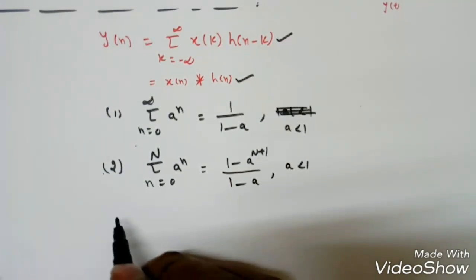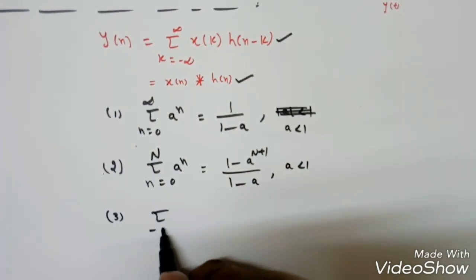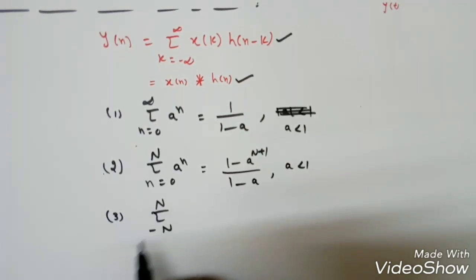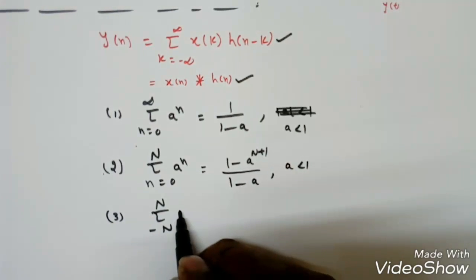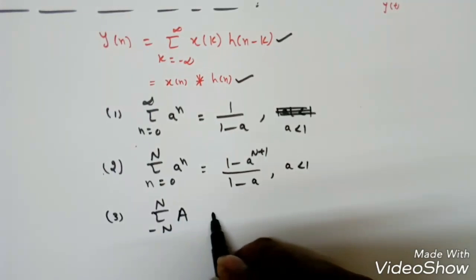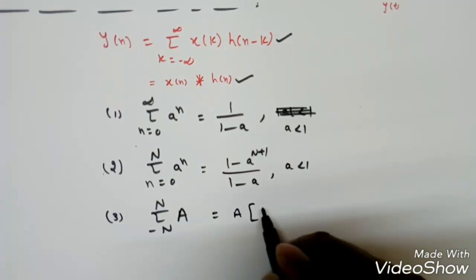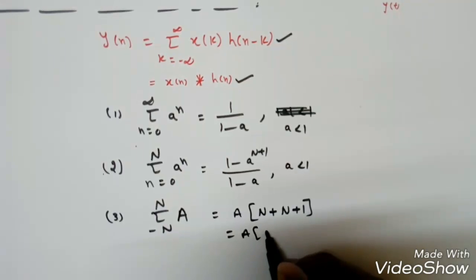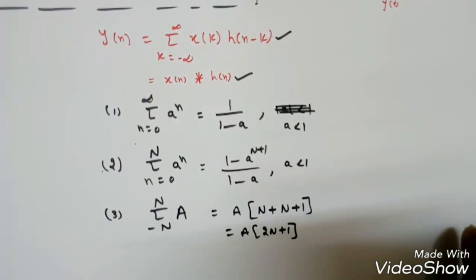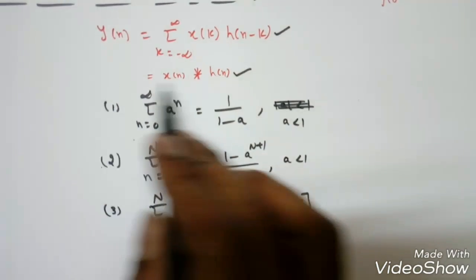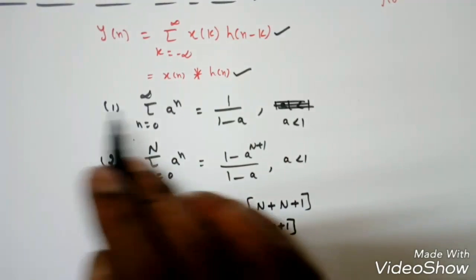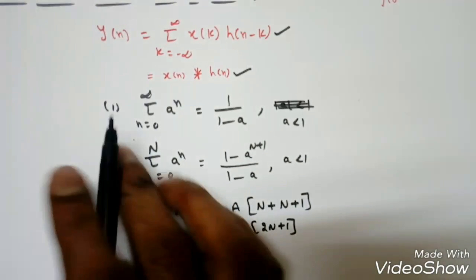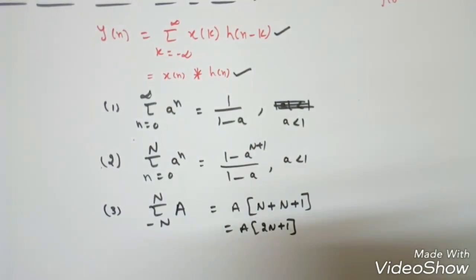The third formula applies when there are two constants as limits and the summand is 1: the result is a·(upper limit − lower limit + 1), which gives a·(2n+1). These are the three important formulas needed when doing discrete-time convolution. Write them on a piece of paper and keep them at your study place. Next we'll see the example.